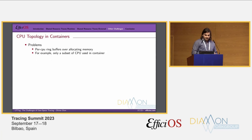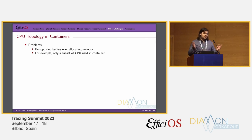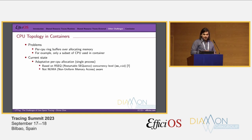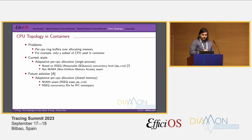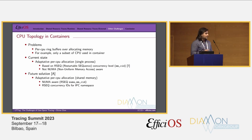Another challenge is CPU topology in containers. If you allocate ring buffers for every CPU visible to the container but the container only uses a subset of CPUs, you over-allocate memory for nothing. The current state is to use adaptive per-CPU allocation based on the RSEC concurrency level using NR_CPUS IDs in the kernel, but it is not NUMA-aware for now. The future solution to improve adaptability is to have adaptive per-CPU allocation over shared memory that is NUMA-aware, similar to the IPC namespace concept.